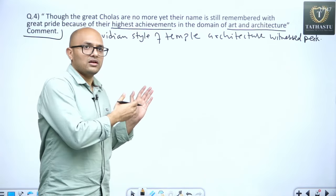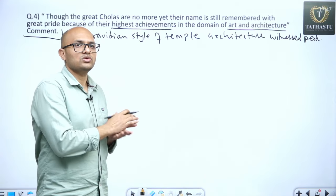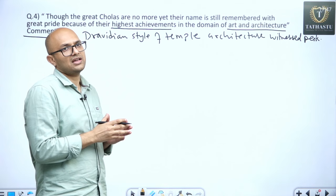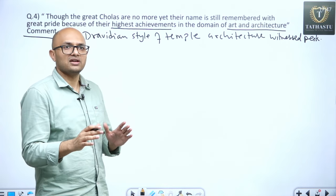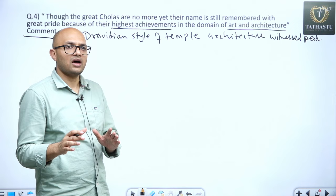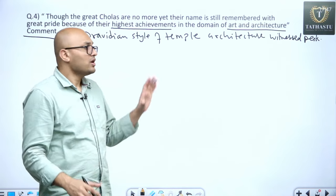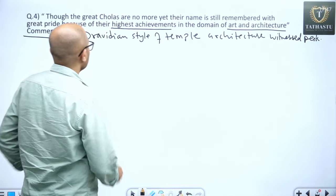We have seen earlier in the last question Pallava question also that the feature of the Dravidian style of temple, freestanding temple was Vimana, then there was Garbhagriha, then there was Antarala, then there was Mandapa, no platform. During this time what was witnessed,